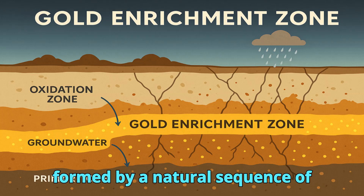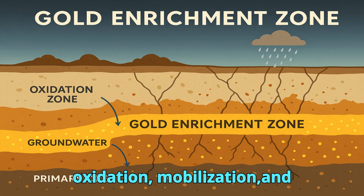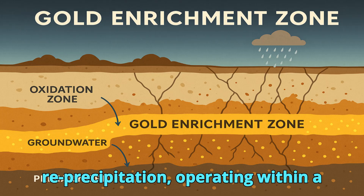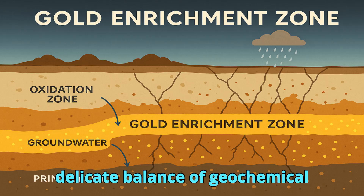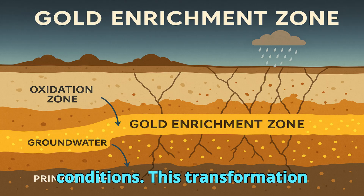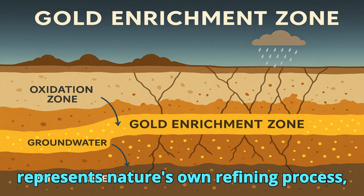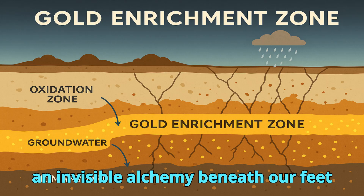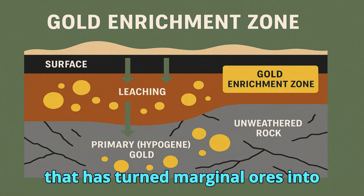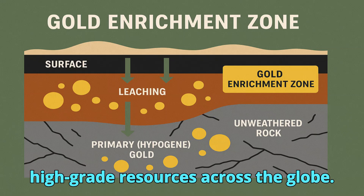In conclusion, gold enrichment zones are formed by a natural sequence of oxidation, mobilization, and re-precipitation, operating within a delicate balance of geochemical conditions. This transformation represents nature's own refining process — an invisible alchemy beneath our feet that has turned marginal ores into high-grade resources across the globe.